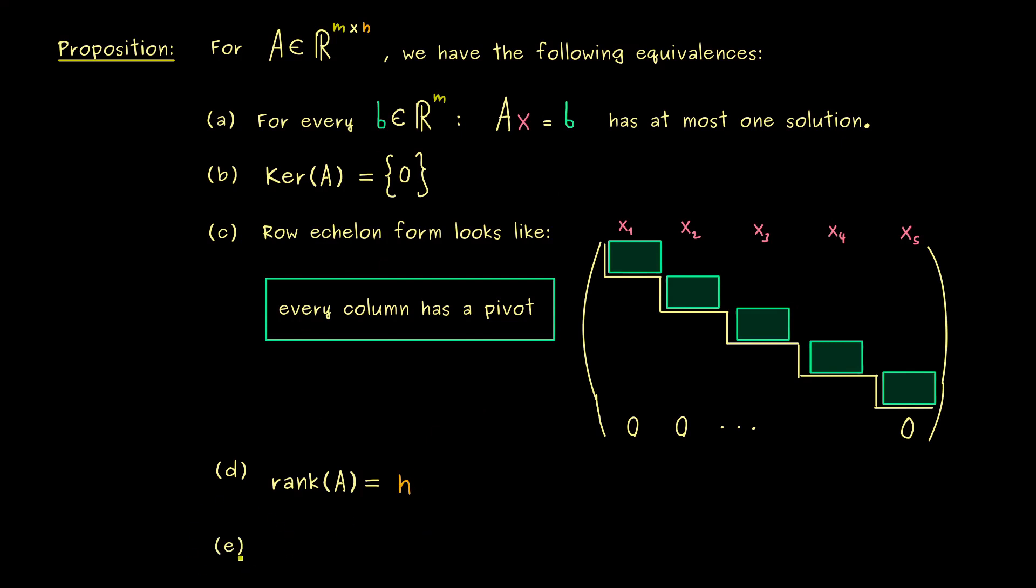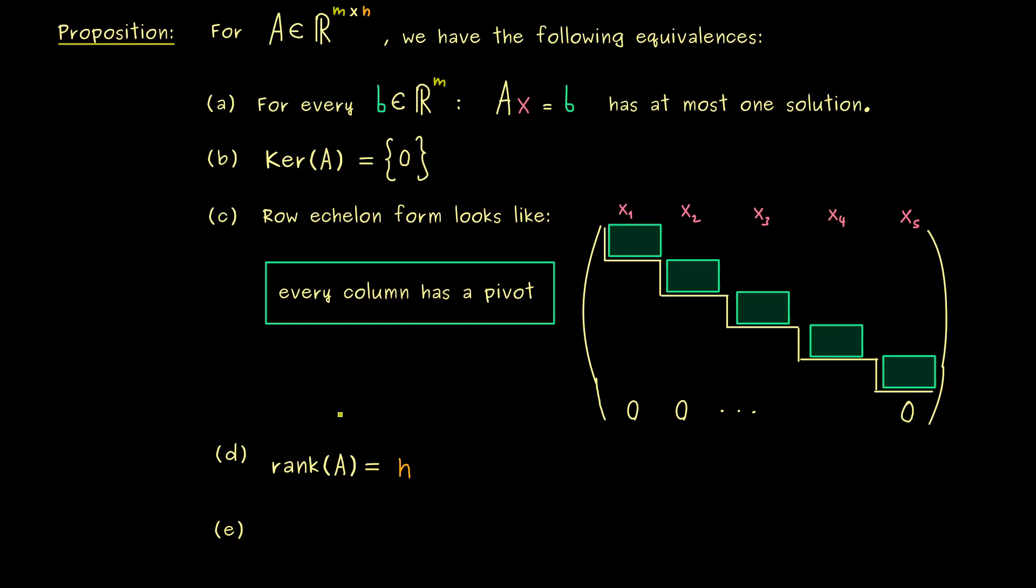Okay, and finally we can describe the most abstract one by considering the linear map of A. So you know, it's a map that sends ℝⁿ to ℝᵐ, simply by sending x to Ax. Okay, and there we see, the first statement exactly describes that this linear map is injective. Therefore, here please also remember, injectivity of this abstract linear map is connected to the kernel of the matrix.